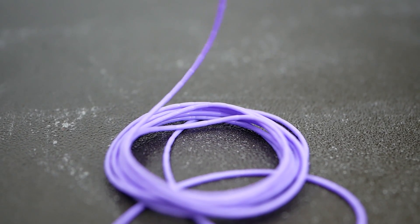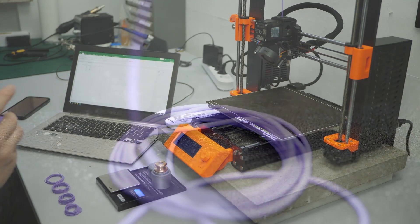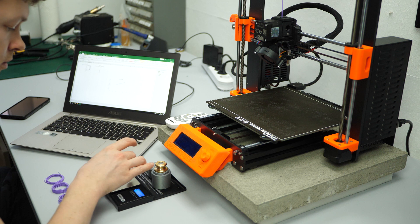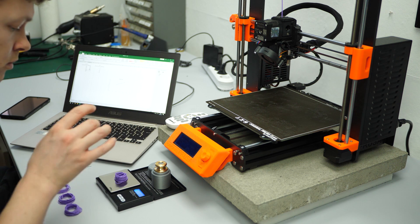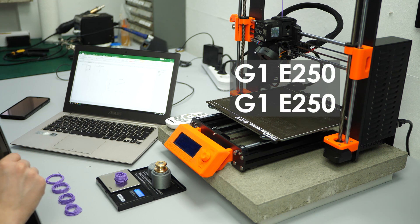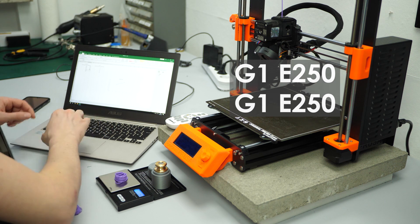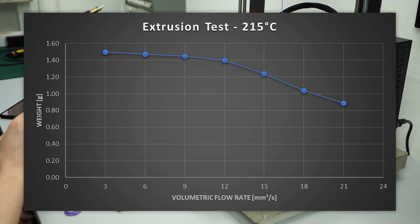This is already an indication that at this point the setup is overwhelmed, but the even more interesting thing is putting these extrusions on a scale and weighing them. We always told the printer to extrude the same amount of filament, but the weight of the extruded material slowly decreases at higher speeds.